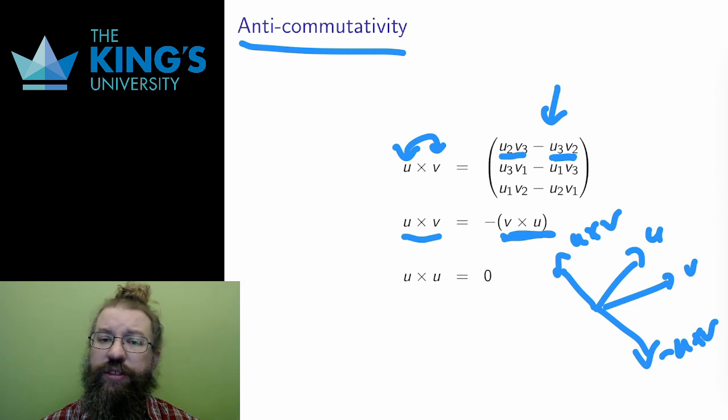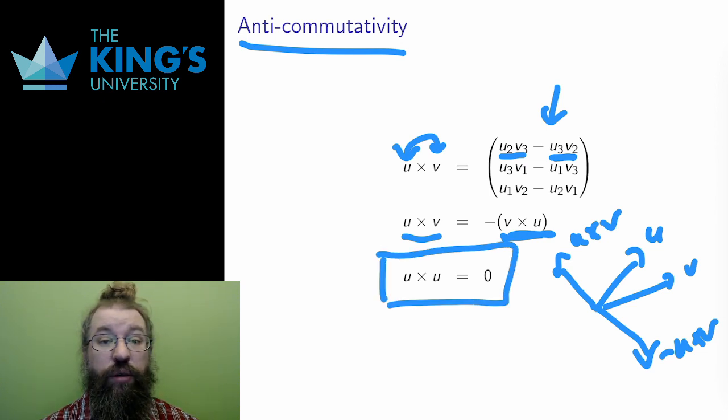Finally, there is one strange implication of this anti-commutativity. The cross product of anything with itself is the zero vector. You can see this in the algebra as well, where all the terms will cancel off. This also makes geometric sense. If I cross a vector with itself, there aren't two directions. There's only one. That means there isn't a unique third direction. And the cross product can't do what it's designed to do. And it just sends back the zero vector.